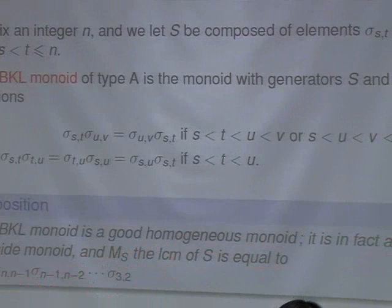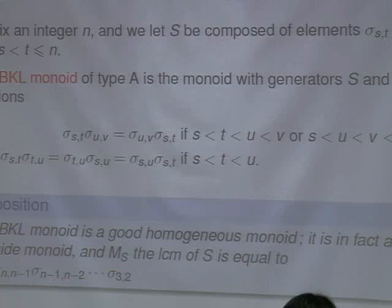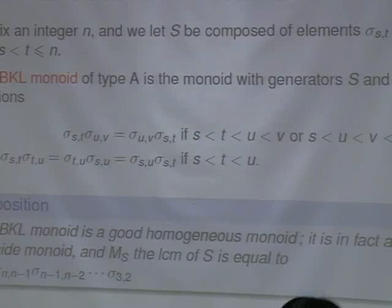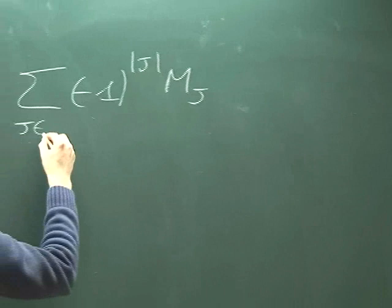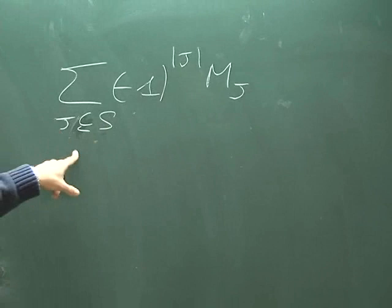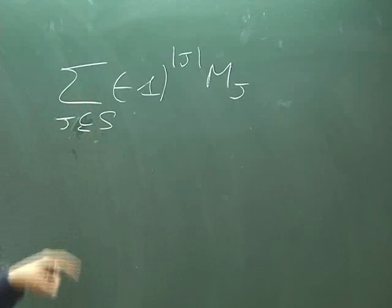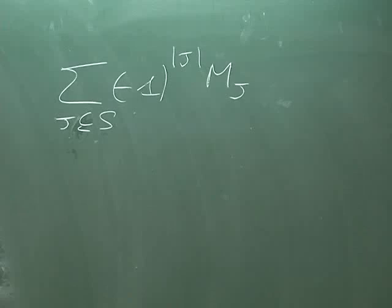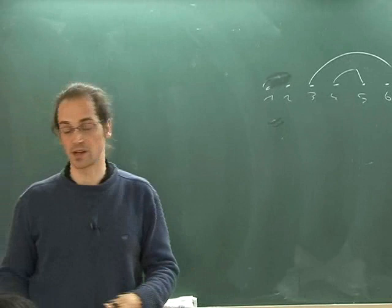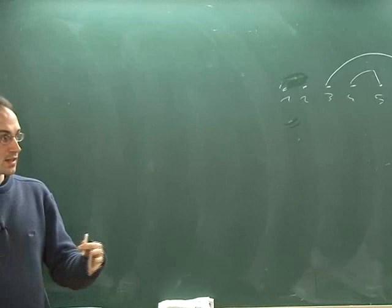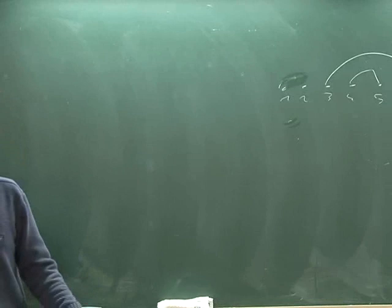The key is that the poset structure is in relation with non-crossing partitions. A partition is non-crossing if there are no crossings when you represent each block by arcs connecting consecutive elements. You order them by refinement: a partition is smaller than another if each block of the smaller is contained in a block of the larger. This is a lattice, a ranked lattice of rank n minus 1, and it's exactly the lattice corresponding to the interval from 1 to Δ in the Birman-Ko-Lee monoid.